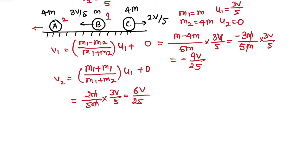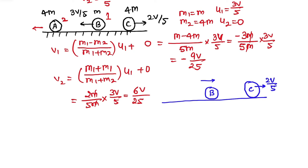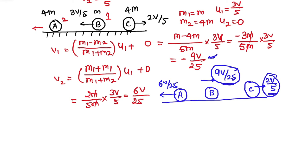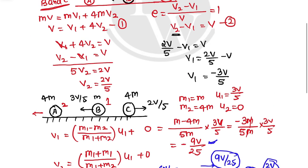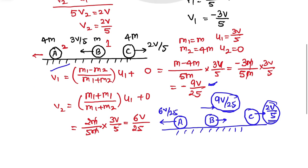After the second collision: C continues right at 2V/5 (≈0.40V), B now moves right at 9V/25 (≈0.36V), and A moves right at 6V/25. Since B's velocity (≈0.35) is now less than C's velocity (0.4), B can never catch C, so no further collision occurs. Therefore, the total number of collisions is only two.